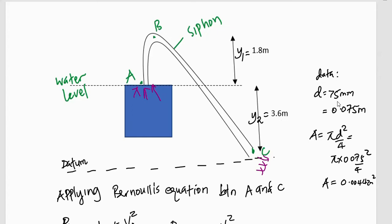The data given is that we have the diameter of the siphon, which is 75 millimeters, that would give you 0.075 meters and meaning that its cross-sectional area would be pi d squared out of 4. The diameter is 0.075 meters and therefore, area would be equivalent to 0.00442 square meters.